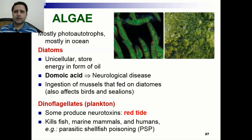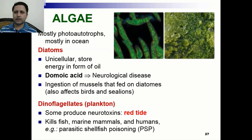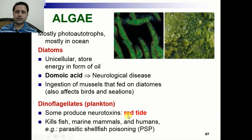Another microbial organism is algae. Mostly they are photoautotrophs, meaning they can produce their own food, and mostly are present in the ocean in an aquatic environment. One example is diatoms — diatoms are unicellular and store energy in the form of oil. Some diatoms produce domoic acid, which is implicated in neurological disease. Ingestion of mussels that fed on diatoms can also affect birds and sea lions. Another example is dinoflagellates — they are plankton, and some produce neurotoxins present in red tide, which can kill fish, marine mammals, and humans.